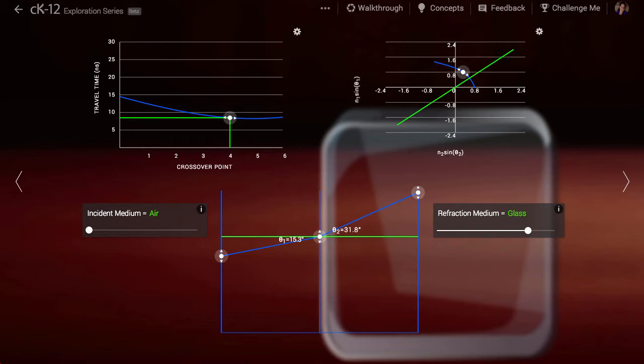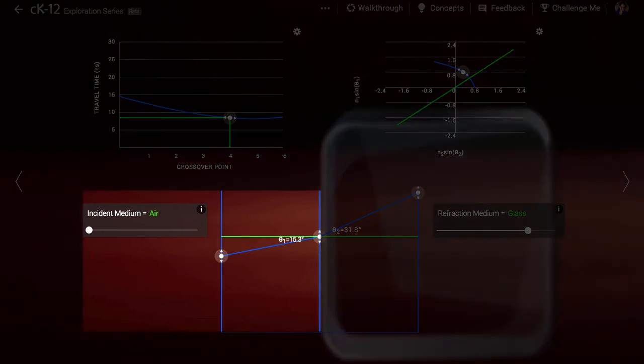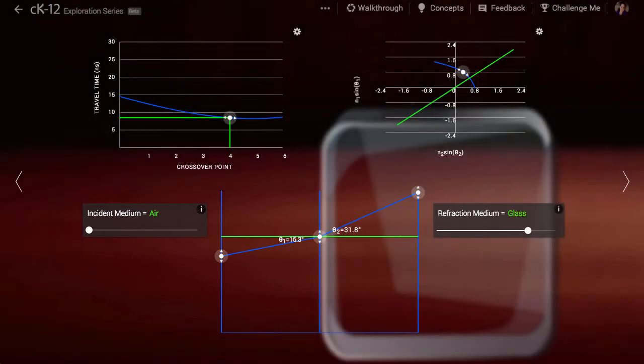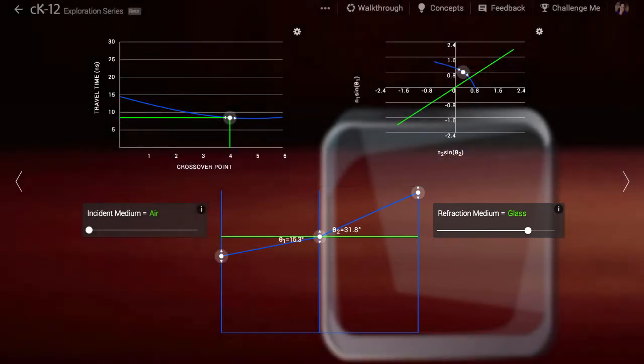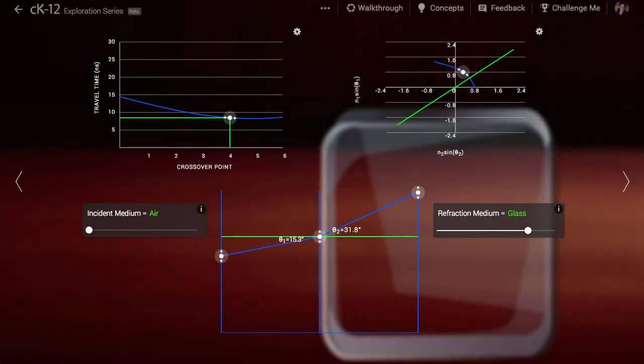In this simulation, we imagine light trying to get from its starting point in air on the left side of the interface to its ending point in glass on the right side of the interface. Light travels quickly in air and a bit more slowly in glass.